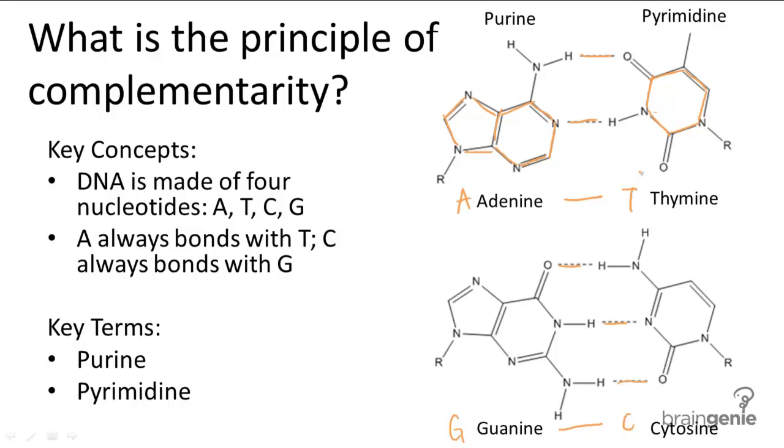Scientists discovered this unique principle because they realized that when they analyzed DNA, the adenine and thymine counts were always the same, and so were the guanine and cytosine counts.